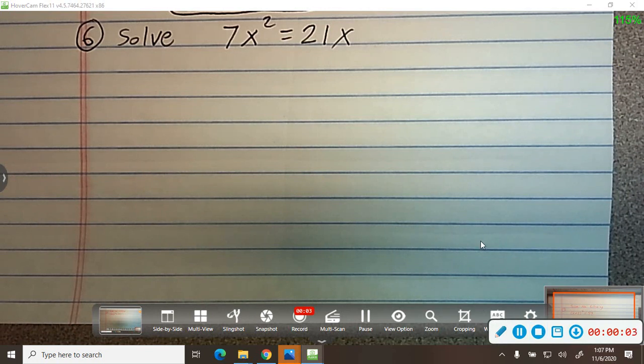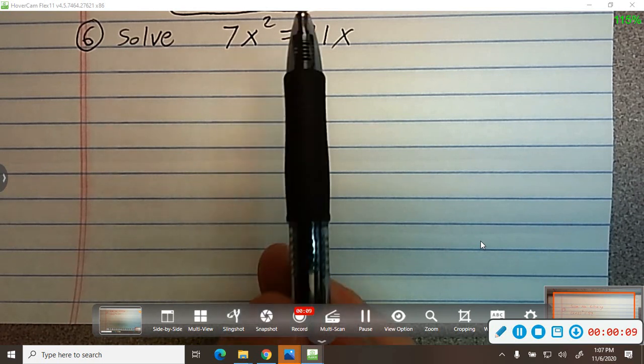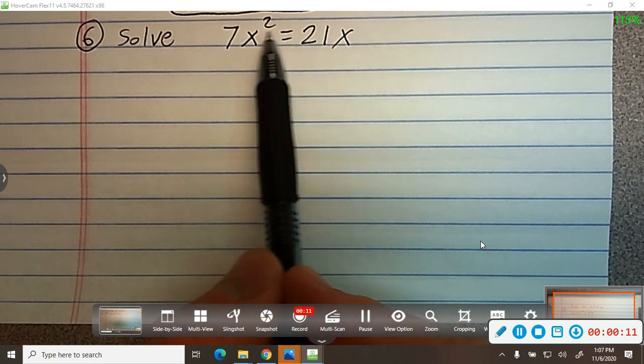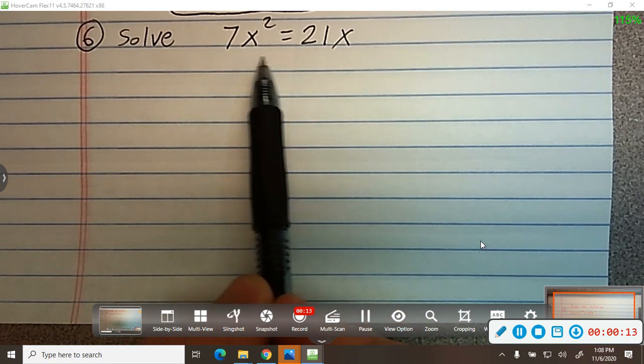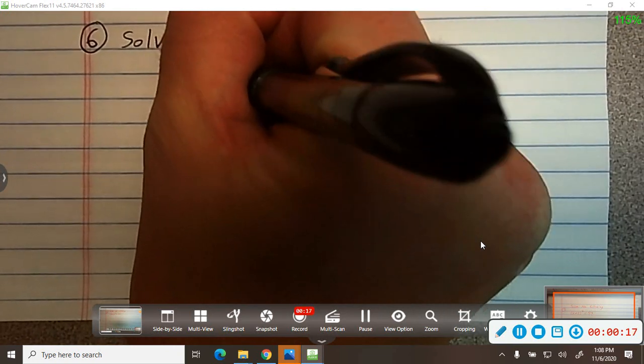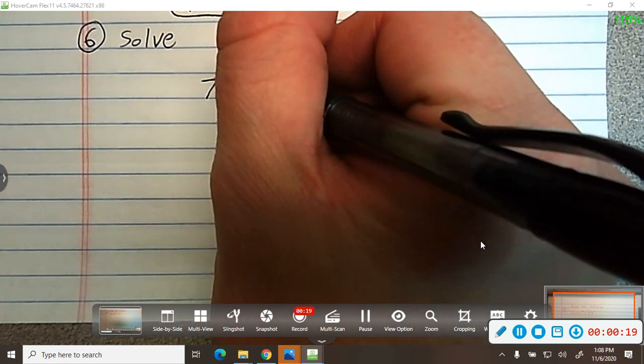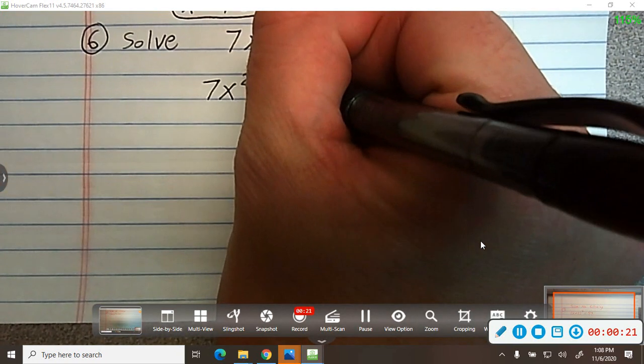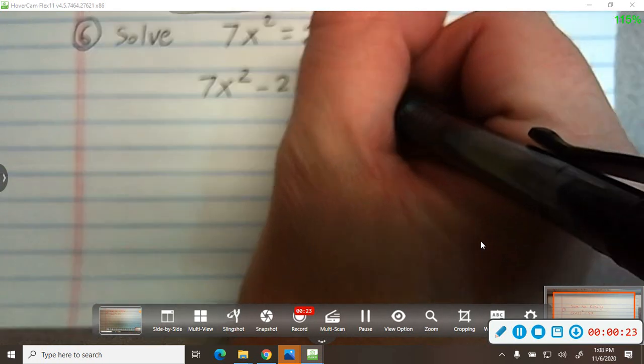Alright, number 6. 7x squared equals 21x. I'm supposed to solve that by factoring. So my first step would be to get the 21x over here by minus 21x on both sides. So I'd get 7x squared minus 21x is 0.